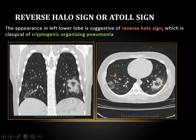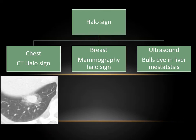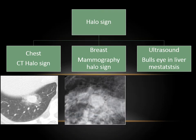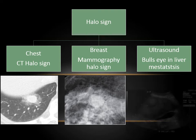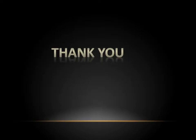For comparison, there is also a reverse halo sign, in which ground glass attenuation is inside the nodule rather than surrounding it — this is a specific sign for cryptogenic organizing pneumonia. The halo sign can also be seen in other modalities: in mammography it is a sign of a benign lesion, either cystic or more benign, where the halo is lucent. In ultrasound, high echogenicity surrounding any nodule or mass may indicate metastasis or malignancy. Thank you very much. Very nice presentation with very good examples.